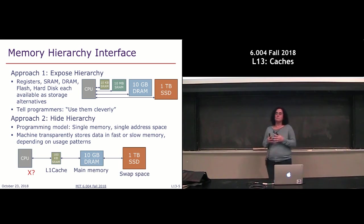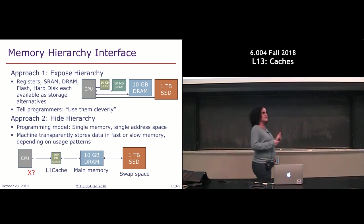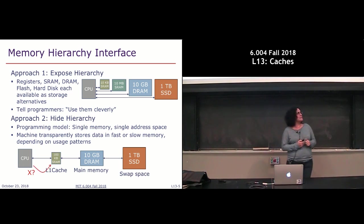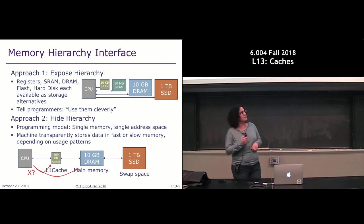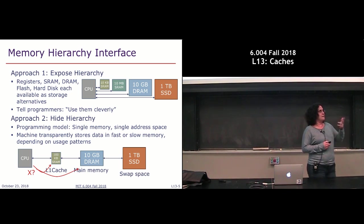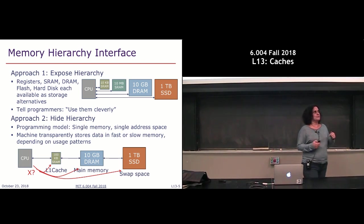Suppose I want to look for an address x — how am I going to find it given all these different memories? I'm always going to look first in my level one cache. If the data I'm looking for is in this cache, I get the answer back quickly. If it's not, I go look for it in the next level — main memory. If I find it there, great. If not, I have to go yet another level deeper. There are implications to potentially getting our data from different sources, which we'll get into in a moment.